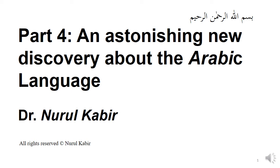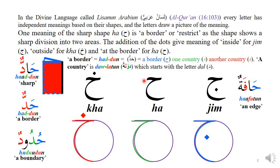In this video we will be continuing our discussion about my discovery about the Arabic language. In the divine language called the lisanan arabian, every letter has independent meaning based on their shapes and the letters draw a picture of the meaning. Today we'll be looking at the meaning of the letter HA and its variants, which are the JIM and the KHA. The HA has a sharp shape — the two ends of the HA meet in a sharp point, so it is always related to something sharp, such as a division between two things.